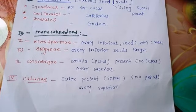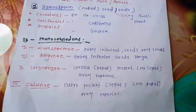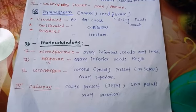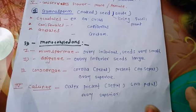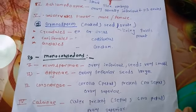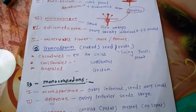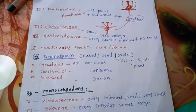The last series has calyx present — meaning sepals are present — but petals are totally absent and the ovary is superior. Thank you friends, please subscribe to my channel and like the video.